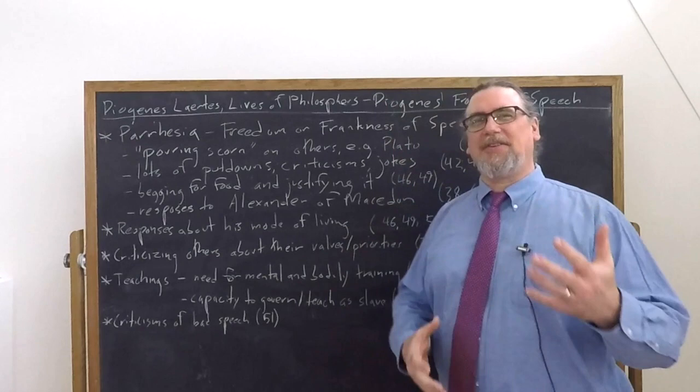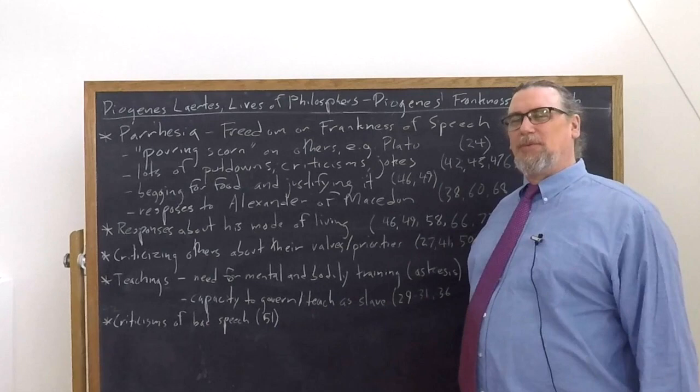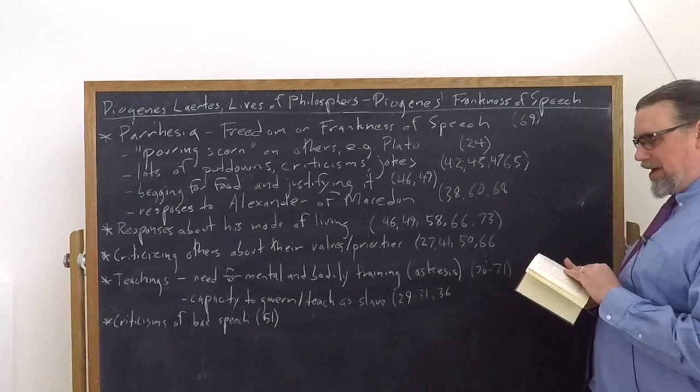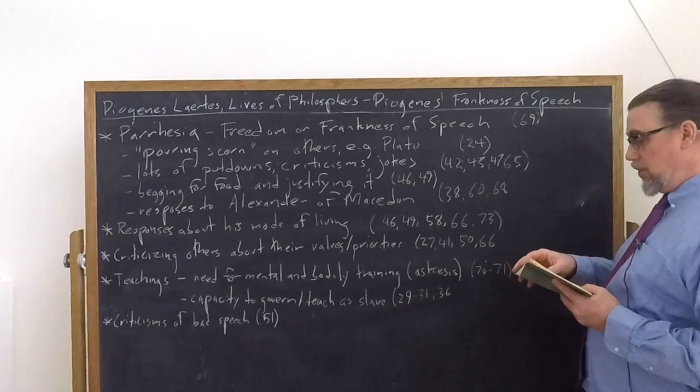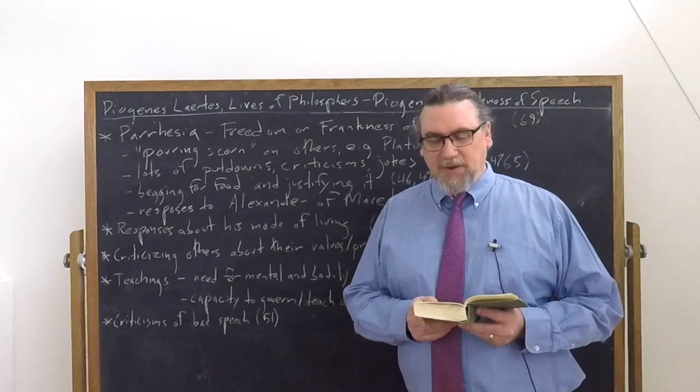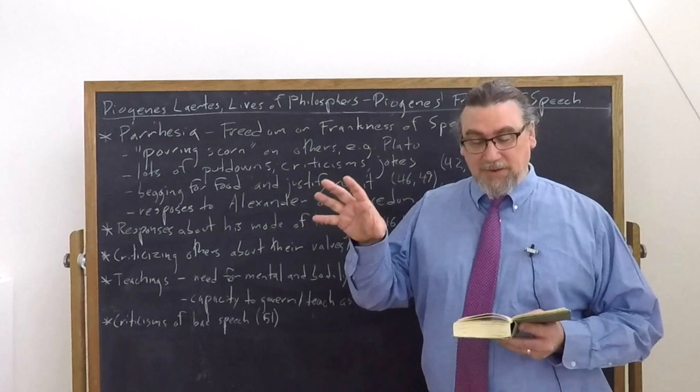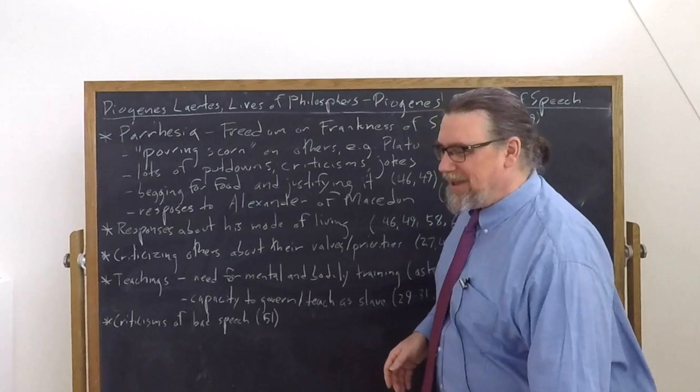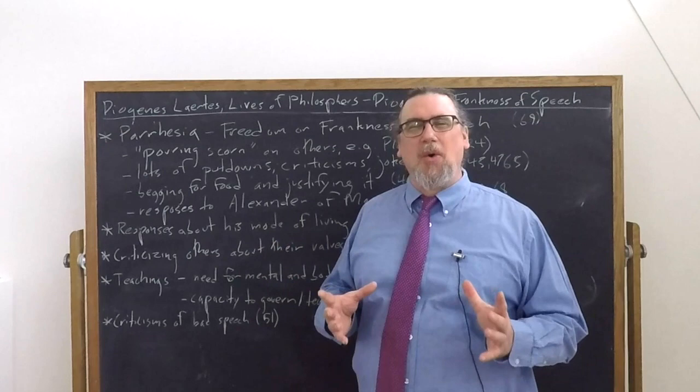There's lots of interesting put downs, criticisms, jokes at people's expenses. Let's just look at a few of these to give you a sense. In one great case, Lysias, the druggist asked him if he believed in the gods. So he's asking him, do you think the gods exist or not? And so Diogenes says, how can I help believing in them when I see a God forsaken wretch like you? So obviously if somebody is God forsaken, the gods must exist. Terrible argument, but a great joke at the time. And it conveys something about the guys character that Diogenes is targeting.